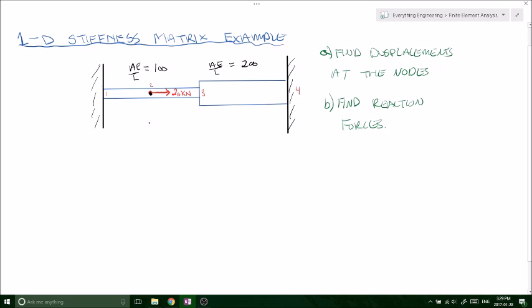So what we're looking at, we've got two elements, both on fixed supports, and we've got three nodes. And what we want to do is we want to find the displacement at each of the nodes and the reaction forces at the ends.